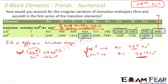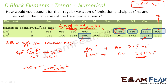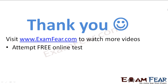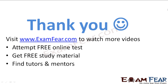Cobalt has a lower ionization energy value — its configuration is [Ar] 3d7 4s2 — which reflects better shielding by d orbitals in the later elements of the series. Visit examfier.com to watch more videos, attempt free online tests, get study materials, and find tutors and mentors.